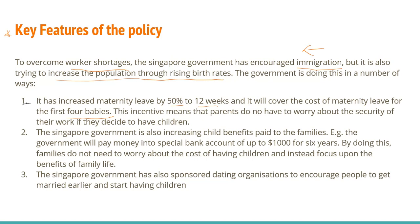The Singapore government is also increasing child benefit paid to families. For example, the government will pay money into a special bank account of up to $1,000 for six years. By doing this, families do not need to worry about the cost of having children and can instead focus on the benefit of having a successful family life. The Singapore government has also sponsored dating organizations and dating sites to encourage people to get married earlier and start having children.